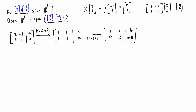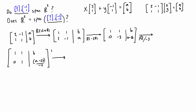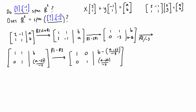Next we want to get a leading 1, so we divide row two by negative 3. Row one remains [1, 1 | B], and row two becomes [0, 1 | (A minus 2B) / negative 3]. Now to complete reduced row echelon form, we do row one minus row two. Row two is unaffected; for row one: 1 minus 0 is 1, 1 minus 1 is 0, and B minus that expression. The right-hand side gets a bit messy, but we've reduced the left-hand side to RREF.